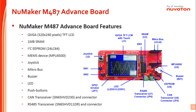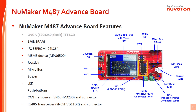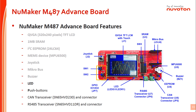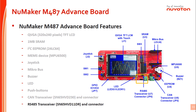The NuMaker N487 Advanced is a daughter board that can work independently but needs to be combined with the NuMaker PFM N487 development board to implement dedicated applications. Its features include: a QVGA TFT LCD with 16-bit RGB565 format, 1MB SRAM, I2C EEPROM, MEMS device, joystick, MikroBUS, buzzer, LED, push button, CAN transceiver and connector, and RS485 transceiver and connector.